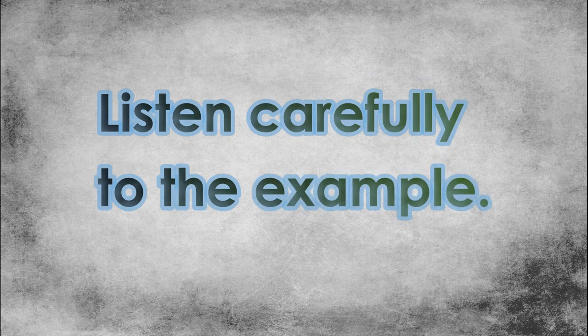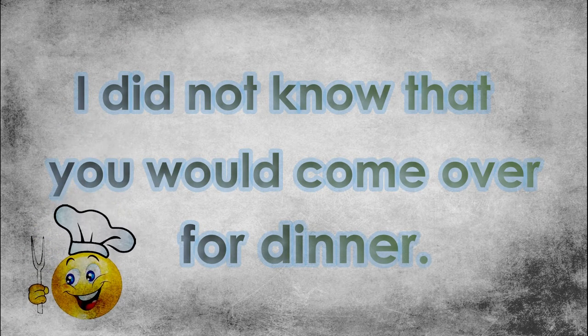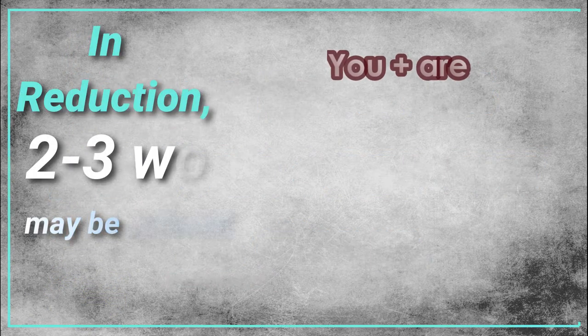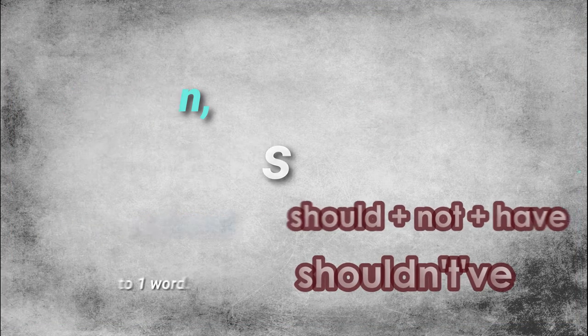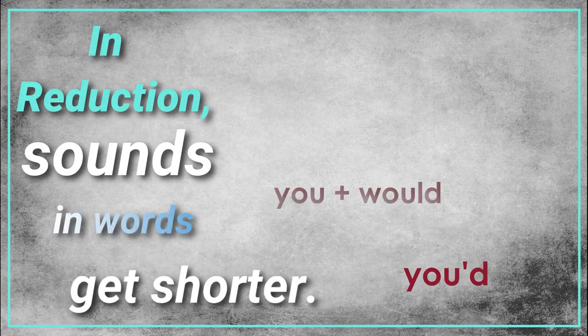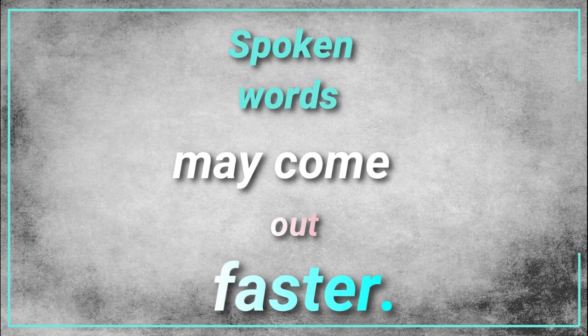"I didn't know that you'd come over for dinner." Did you hear what's being said? The speaker is just saying: "I did not know that you would come over for dinner." You may be very familiar with the reductions being used in that sentence. Maybe you noticed already what is one way that words can get reduced. Sounds in words tend to get shorter, which of course makes some people — more specifically native speakers — sound really fast.